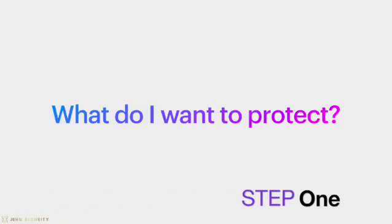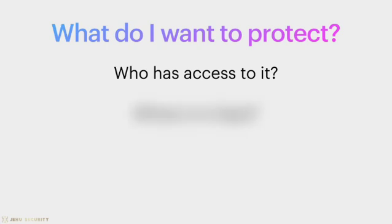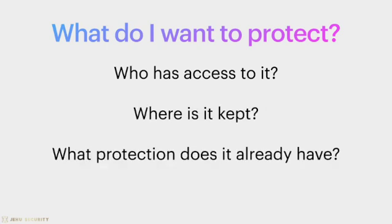Step one: what do I want to protect? A good way to start is to make a list of all groups or key pieces of information or assets that you want to protect. Try to let your mind go and write down everything you can think of — don't second-guess yourself. This could be any information: emails, your location, photos, contacts, financial or medical information, items like phones and computers, and much more. After you have made the list, write down some additional information about each entry: who has access to it, where is it kept, and what protection does it already have. For example, your medical records may be stored in a file on your computer that you share with your family, and the computer is password protected.